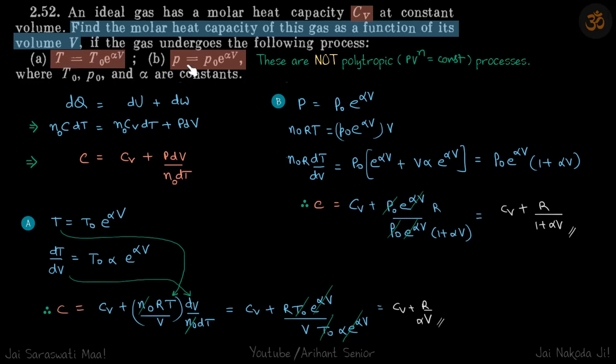We are given these processes, quite weird processes, and we need to find the molar heat capacity of the gas as a function of volume. It's also given that molar heat capacity of the gas at constant volume is Cv. Quite obviously these are not polytropic processes of this form, so our usual formulas will not work here.